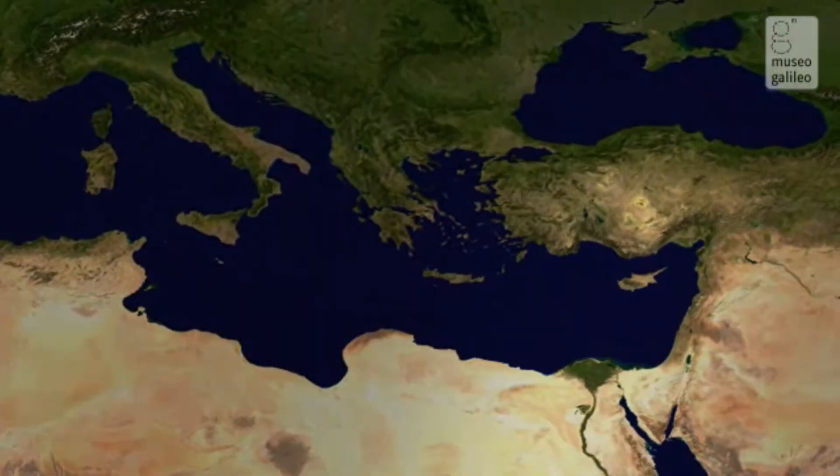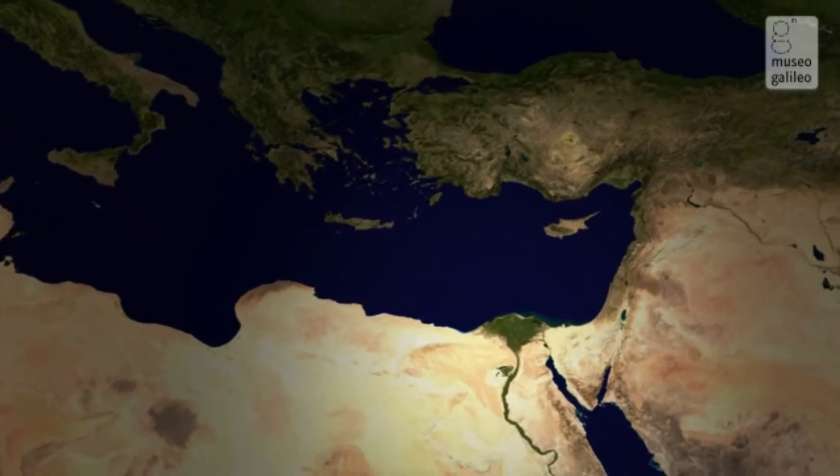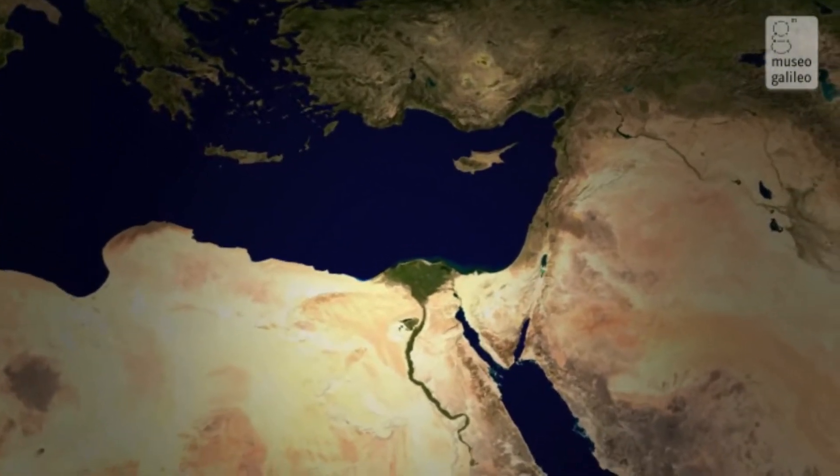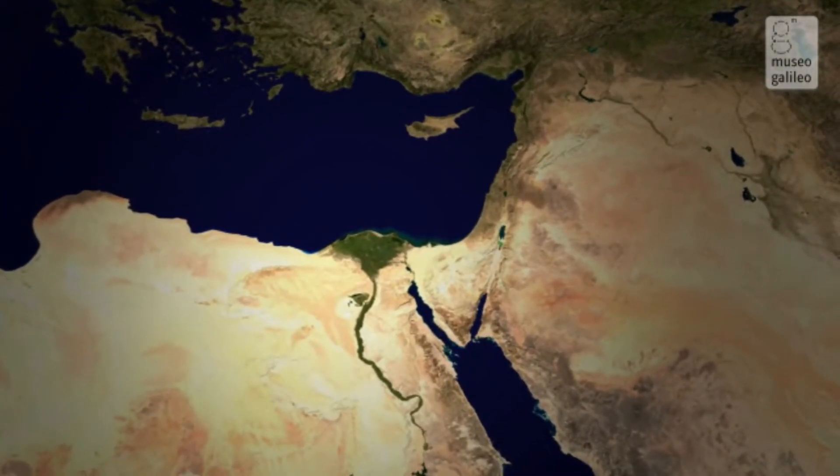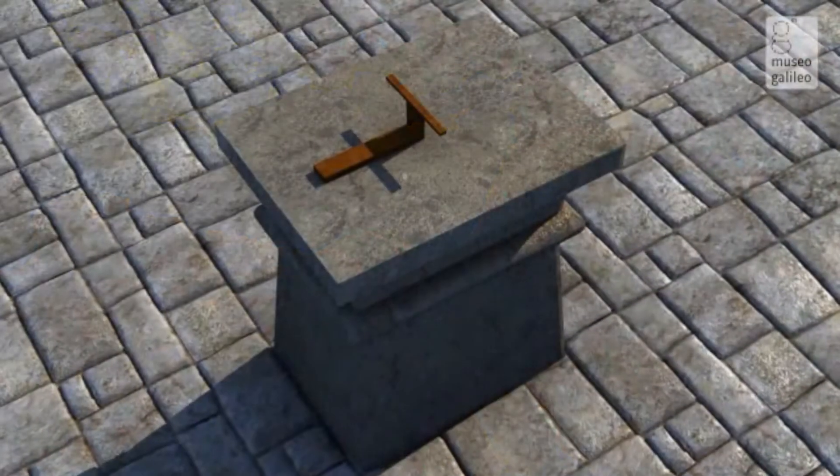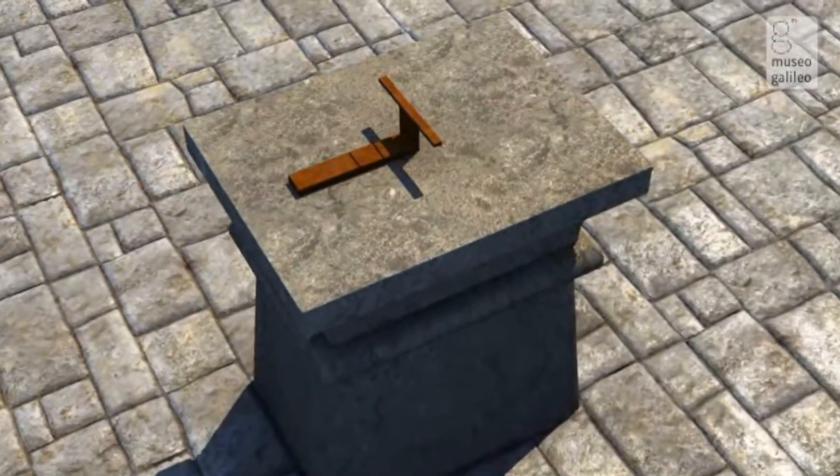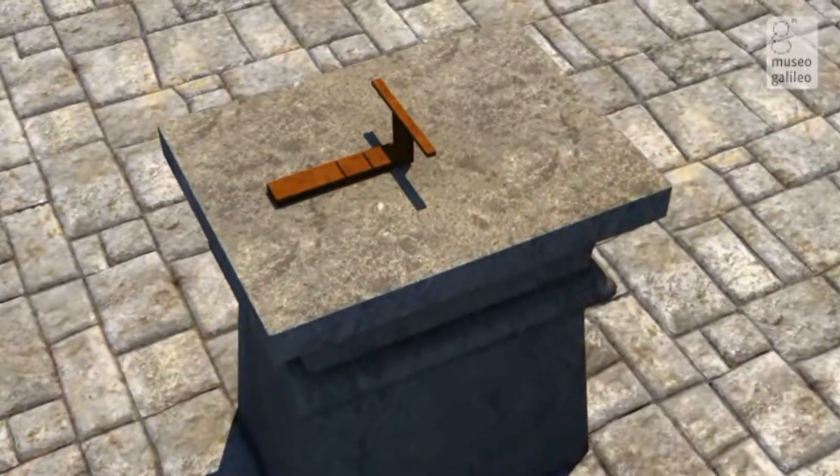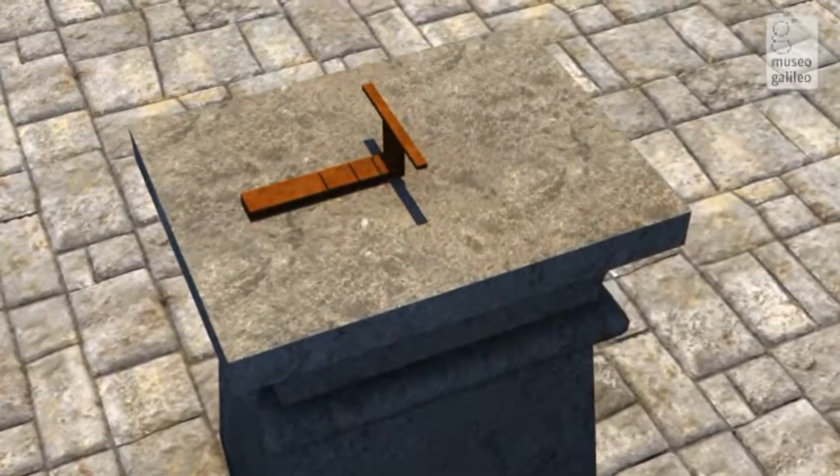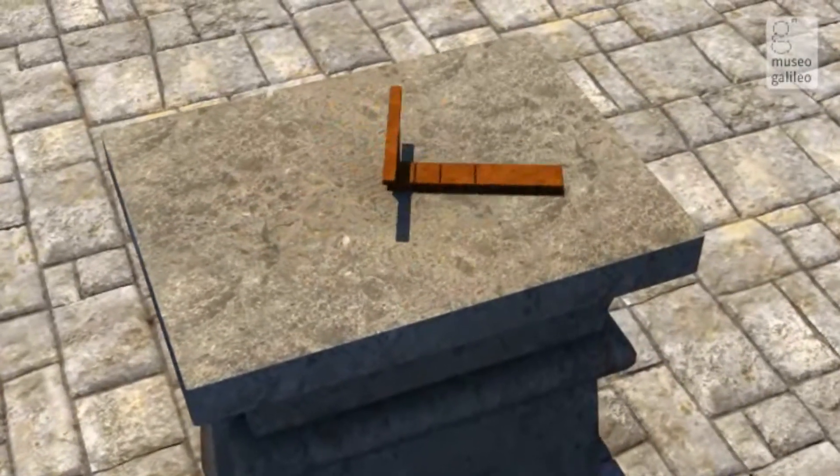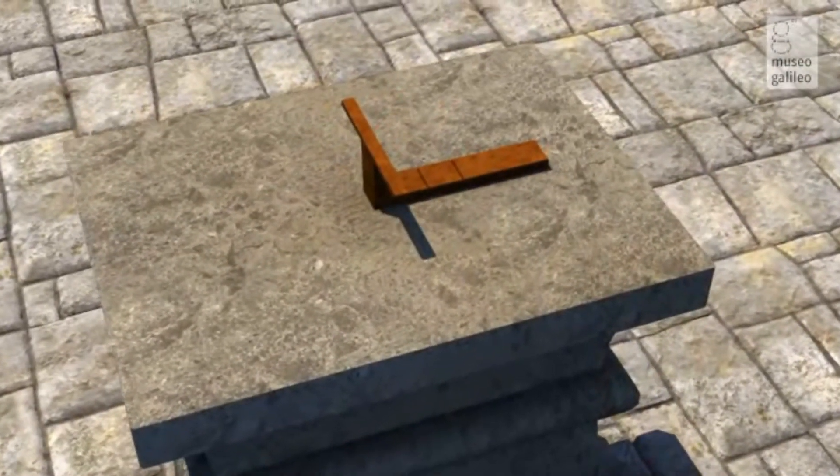The first sundials appeared in ancient Egypt, where they developed into two broad categories: monumental and portable. The first known portable sundial dates from about 1500 BC. The length of a shadow cast by an index on a horizontal rule gave the morning time, and when the instrument was turned round, the afternoon time.